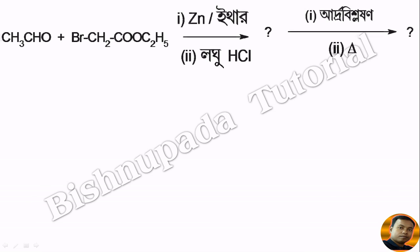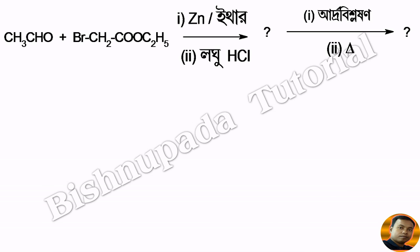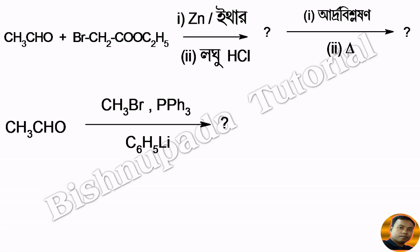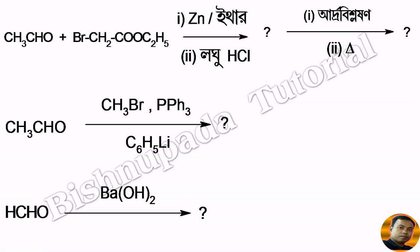Here: CSTCHO, alpha-bromoester, and zinc. Here, referred mask. Here: CSTCHO, CSTBR, PPAC. Here, press LCHO served with barium hydroxide.